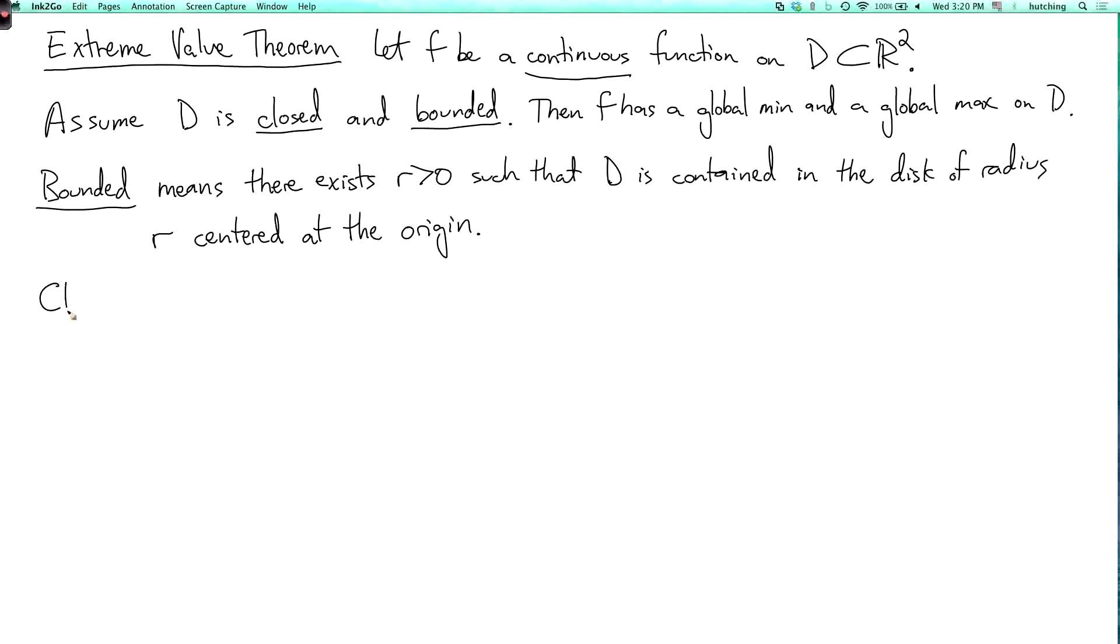Now closed is a little more subtle, and I'm just going to give you a rough statement in words. So closed means roughly that D contains all of its boundary points.